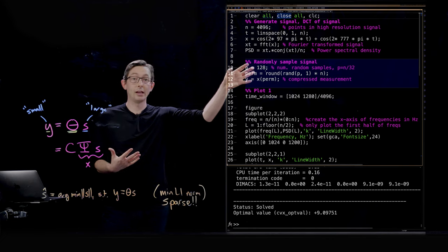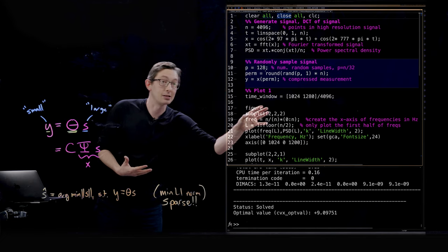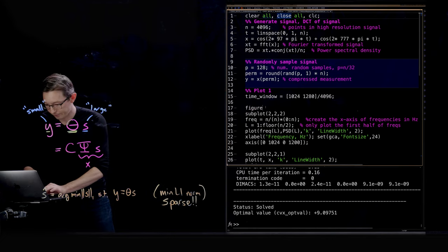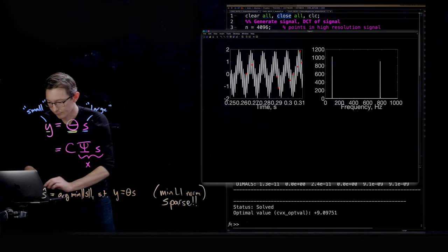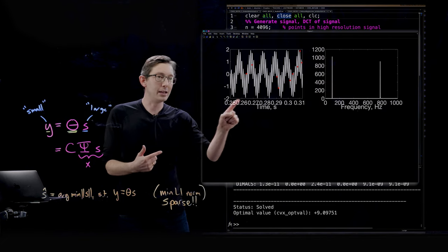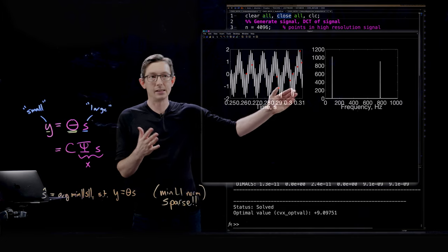We have randomly sampled 128 of those measurements and now I'm just going to plot what this looks like. So here you can see this is just a zoom in of a fraction of the second so you can see it in time of this two-tone signal.